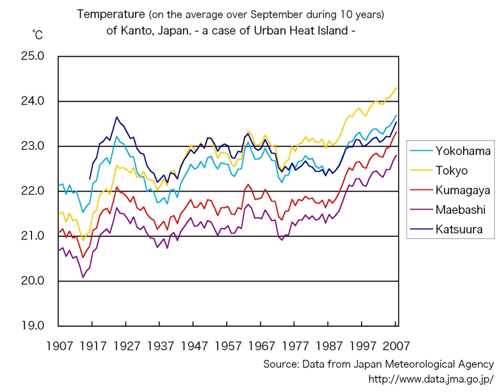As a population center grows, it tends to expand its area and increase its average temperature. The term heat island generally refers to human-disturbed areas. Monthly rainfall is greater downwind of cities, partially due to the UHI. Increases in heat within urban centers increase the length of growing seasons and decrease the occurrence of weak tornadoes. The UHI decreases air quality by increasing pollutants such as ozone, and decreases water quality as warmer waters stress nearby ecosystems.